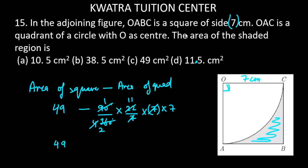So we have 49 minus 77 over 2. Taking LCM, we get 98 minus 77 over 2, which gives 21 divided by 2, which is 11.5 cm squared.